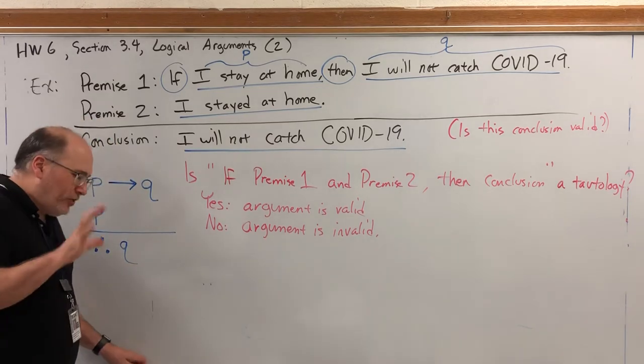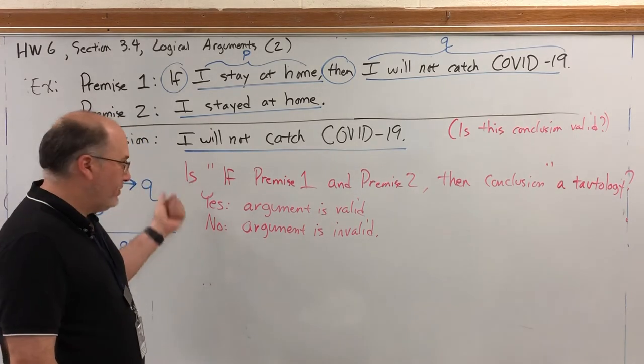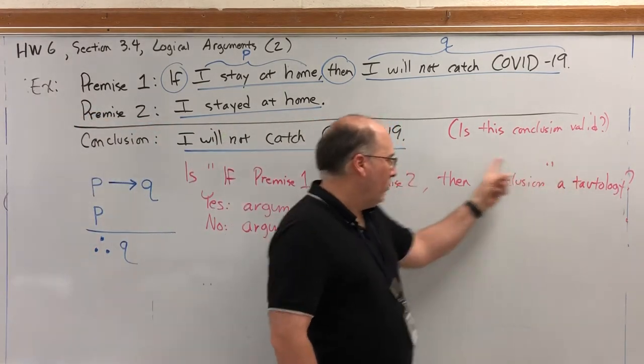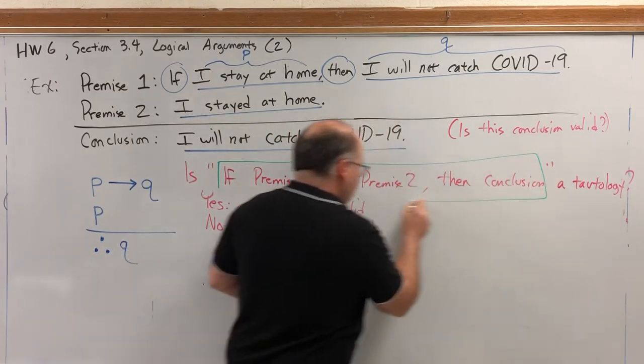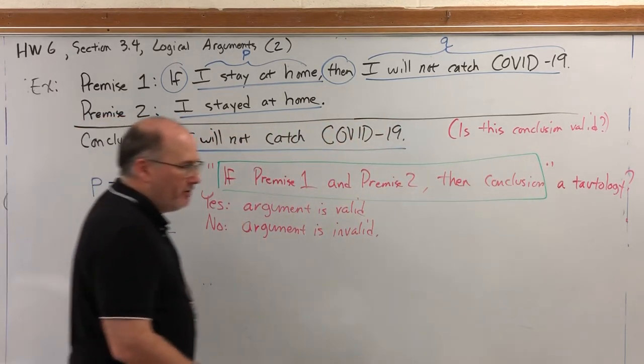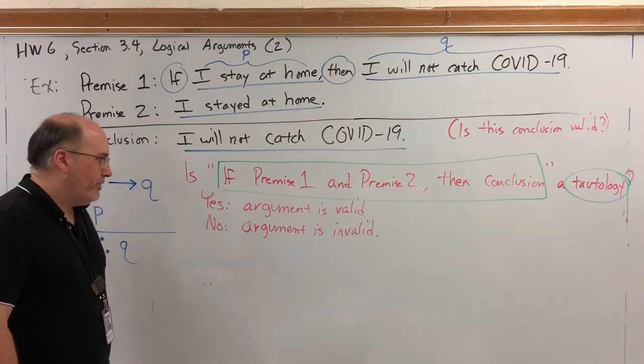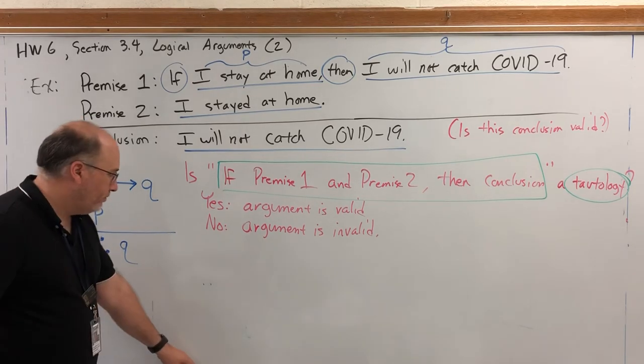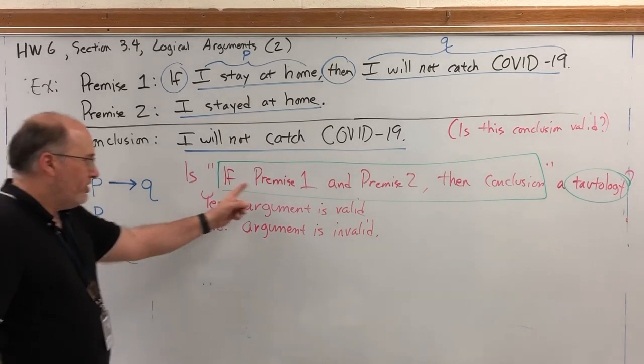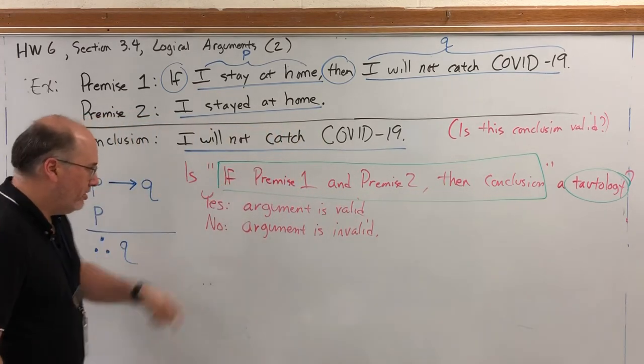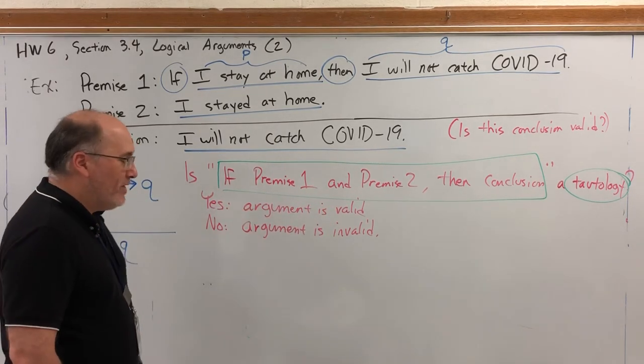So, it looks like we're right on the precipice of setting up how to analyze the validity of an argument. If we can set up a truth table for the statement I have in quotations here. If we can set up a truth table for that, complete the truth table, and see if it's a tautology, then we'll know whether or not the argument is valid, and whether or not the conclusion must follow. In the next video, we're going to do precisely that. We're going to set up this compound statement for this argument, build its truth table, and see if we have a tautology.